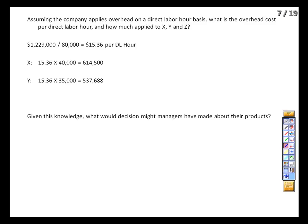Product X, which uses 40,000 hours, will absorb $614,500 of overhead cost. Product Y will use just a little less than that — $537,688. And then Product Z, which isn't particularly labor-intensive, will absorb the remainder, or $76,813.